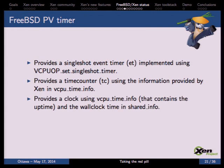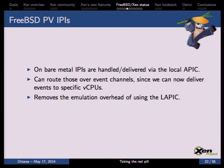The PV timer is implemented using hypercalls, implementing an event timer using the set-single-shot timer hypercall to get interrupts from Xen at specific intervals. We also provide a time counter and a wall clock using information shared by Xen in the vCPU time infrastructure, fulfilling all FreeBSD timer needs using PV interfaces without any emulated devices. For PV APICs, on bare metal we normally use the local APIC to inject and receive IPIs. Since we can now inject event channels into specific vCPUs, we no longer need the local APIC — this removes overhead and means fewer VM exits because we don't have to read or write to the local APIC.